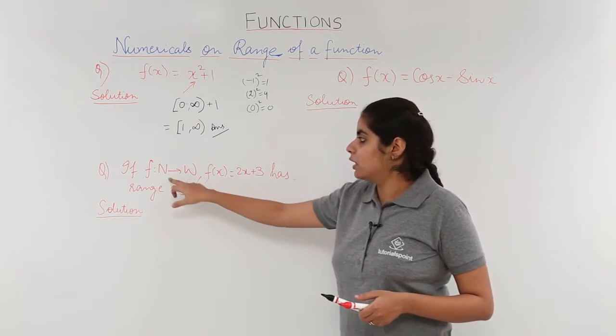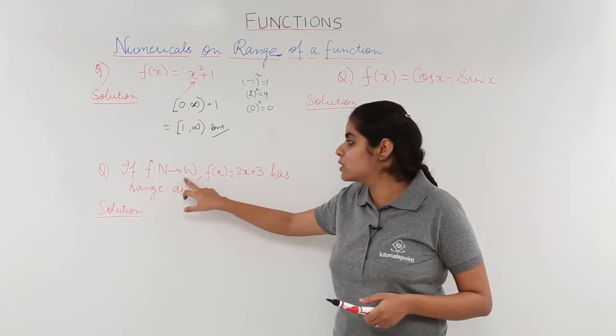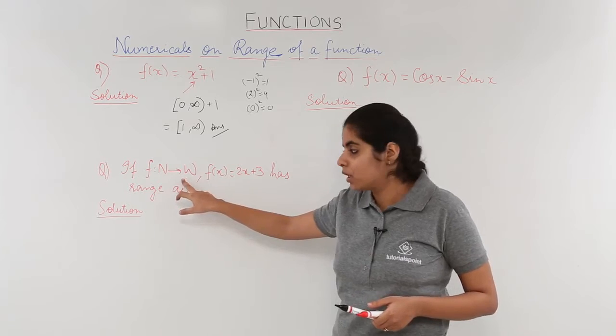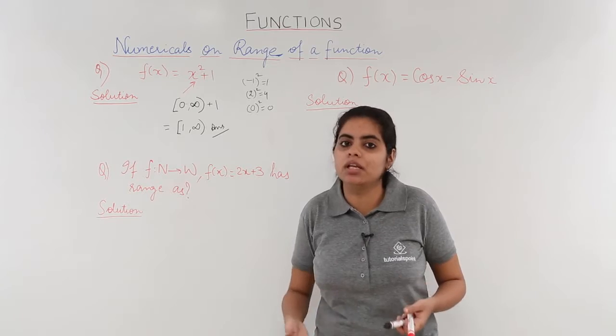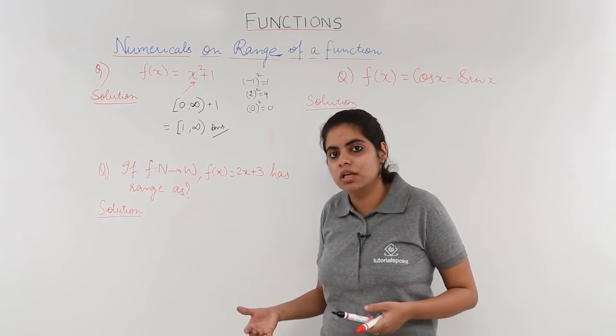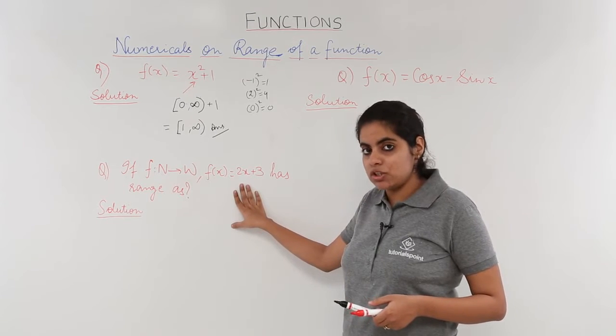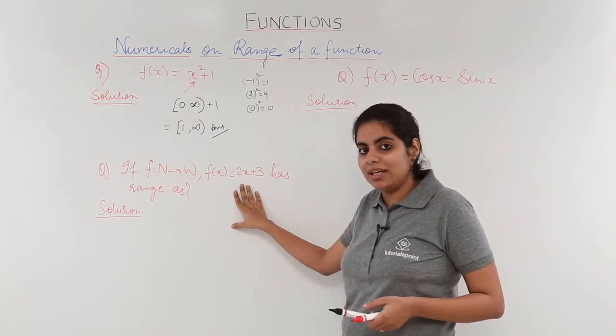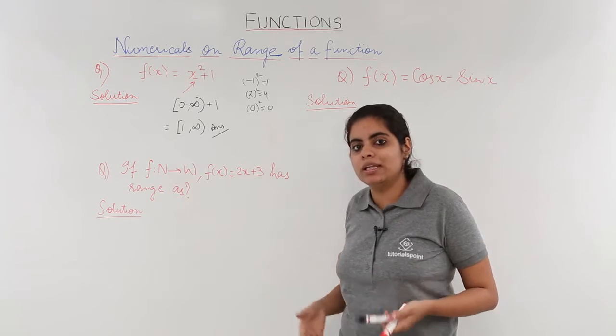If the function n to w, n is natural number set, w is whole number set. f(x) equals 2x plus 3 is the given function and he asks me to find the range. What is the range of this function? So if you look at this function again, this function would have the range depending upon what values of x do you put in this function.